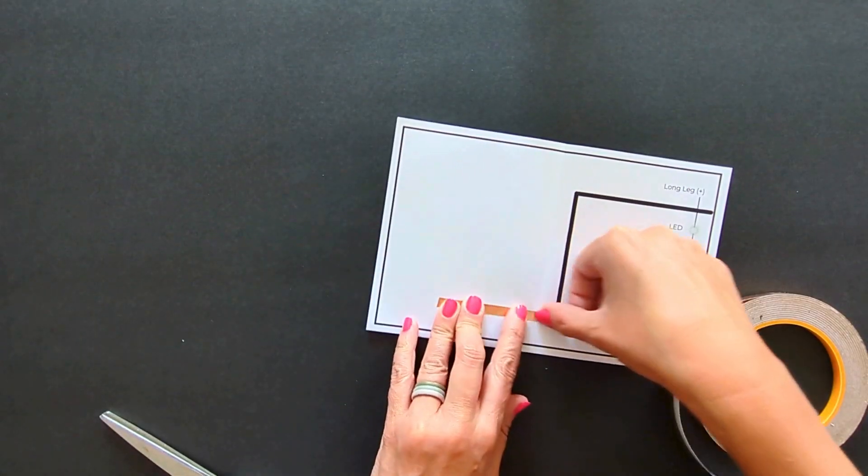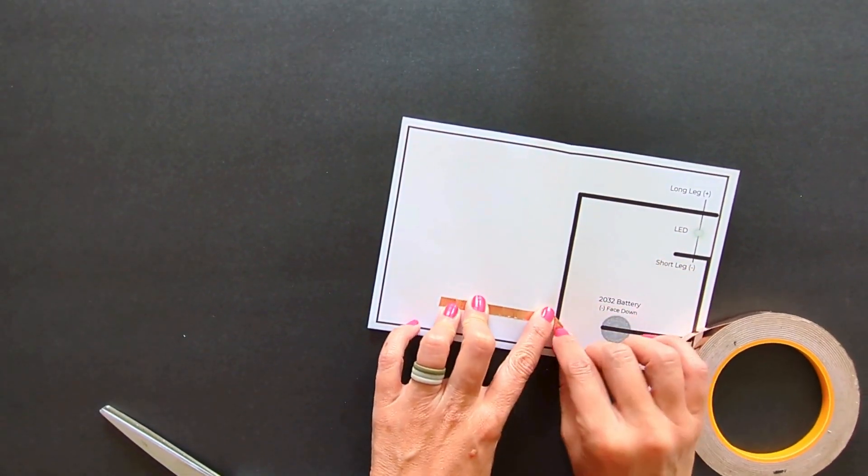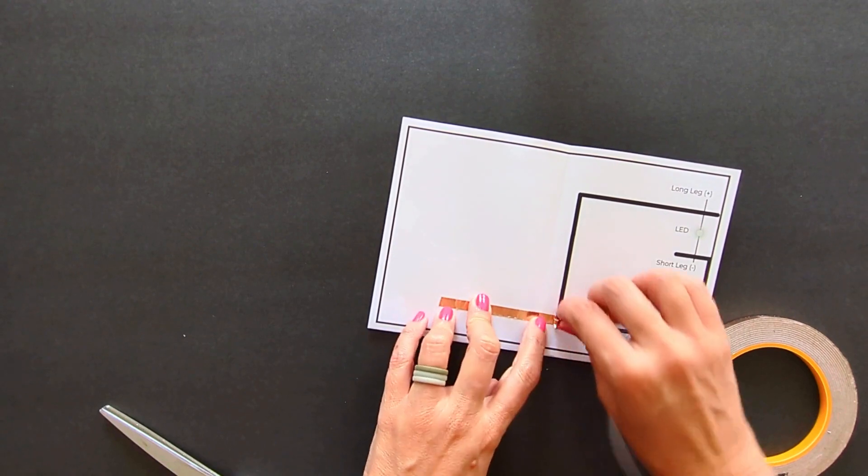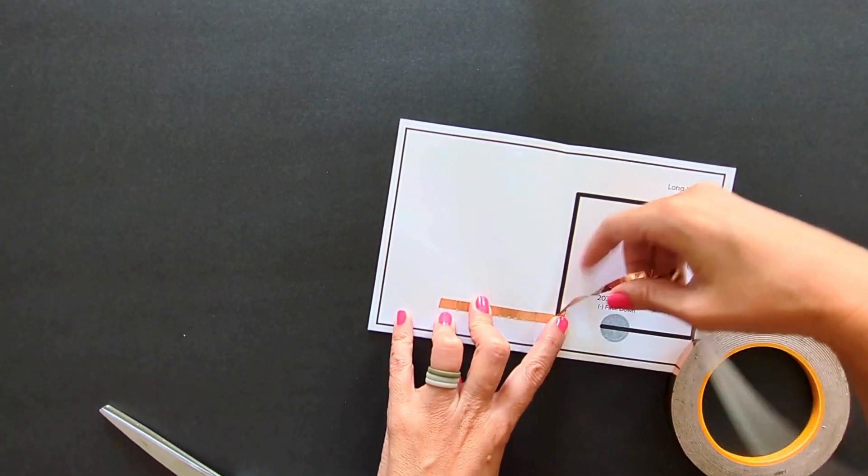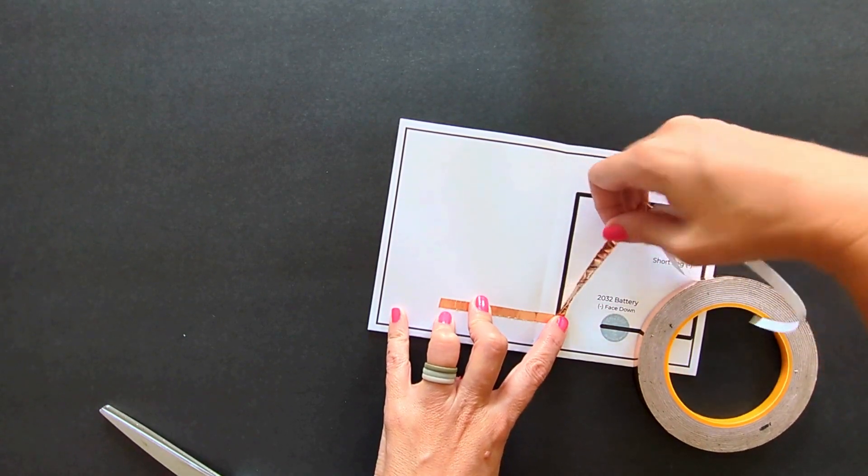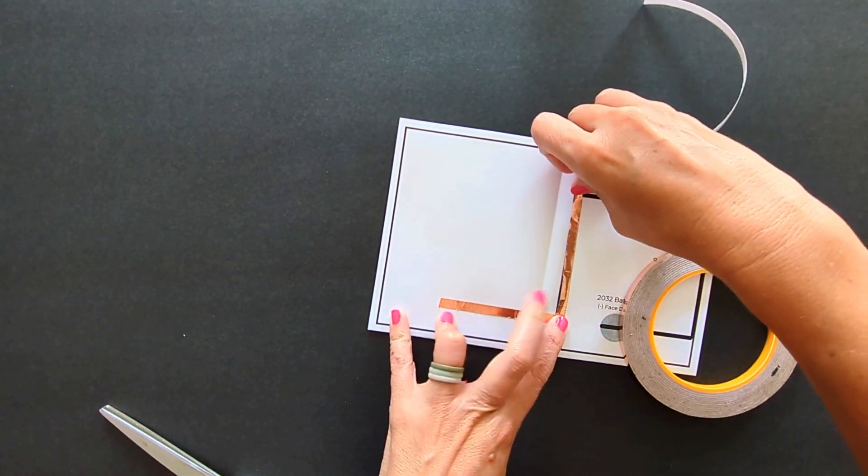Now it's time to build the circuit. Place the copper tape along the bold lines. Take your time with this step. You can fold the tape back and bend it at 45 degree angles to turn the corners or cut small strips, whichever works best for you.